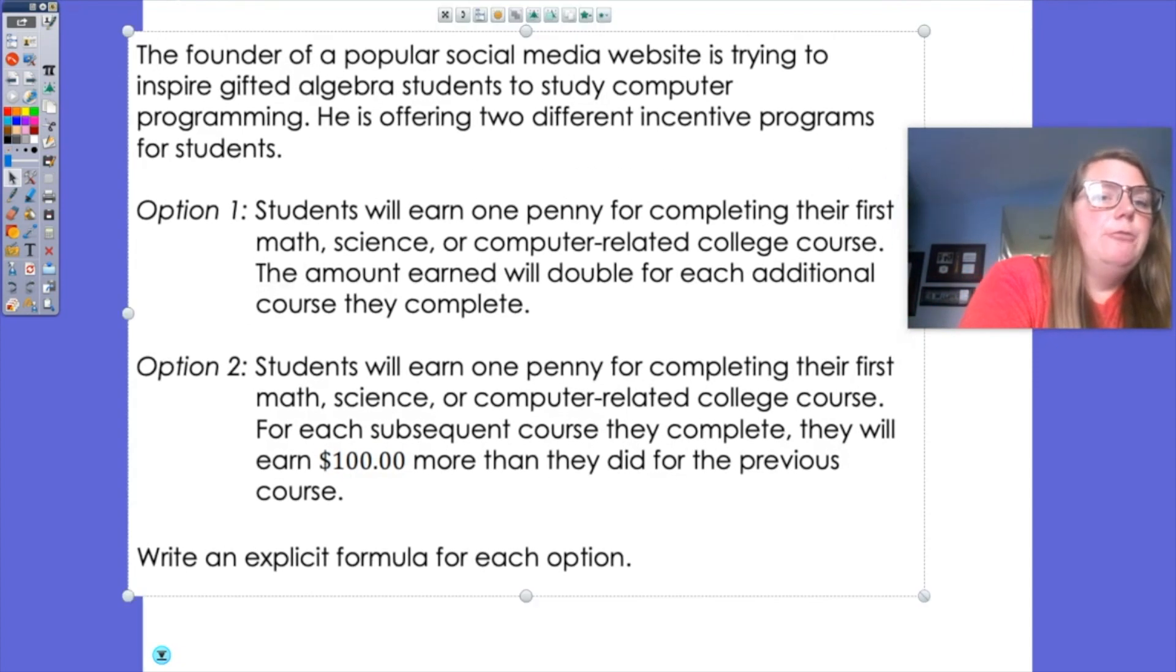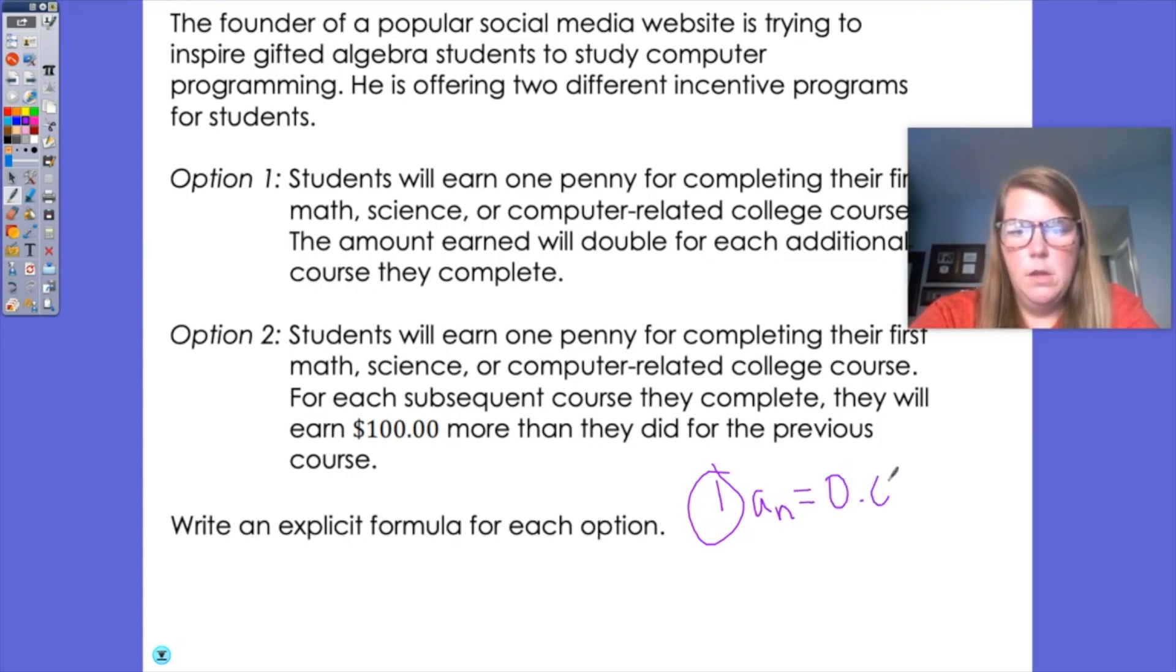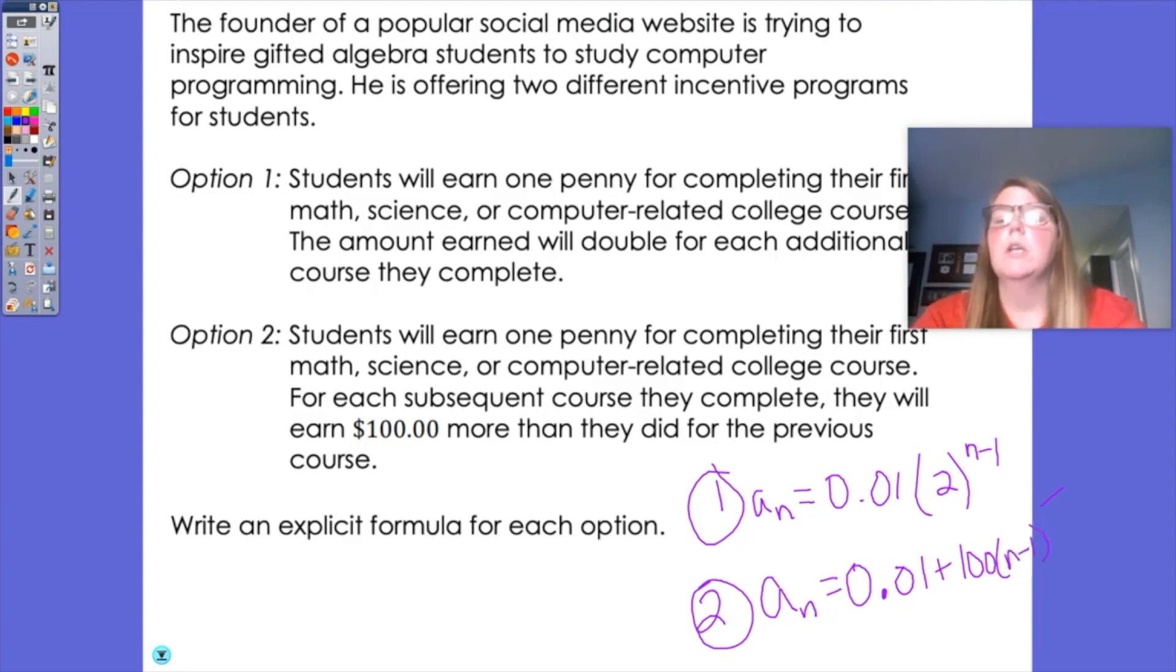So we want to write an explicit formula for each problem. So option number one is geometric because we're multiplying by some number each time. So for any number of courses, we're going to take our first amount, which is a penny, and we're doubling each time, so we have times two to the n minus one power. Then if we're talking about option number two, that would be arithmetic because we're increasing by a hundred dollars for each course. So a sub n would be one penny plus my hundred dollars times my n minus one.